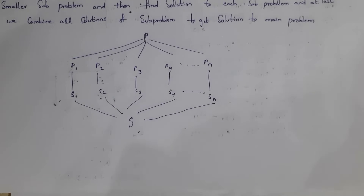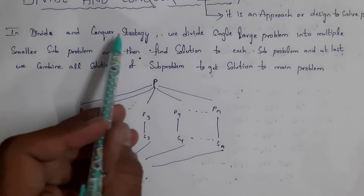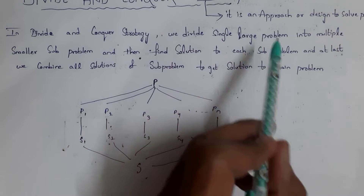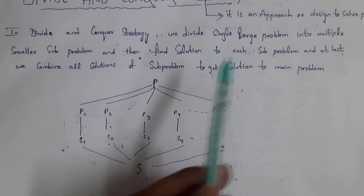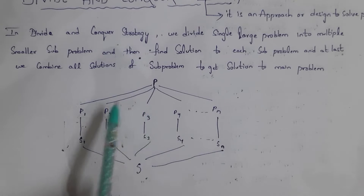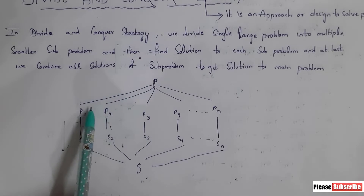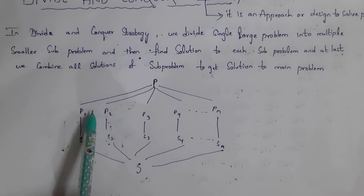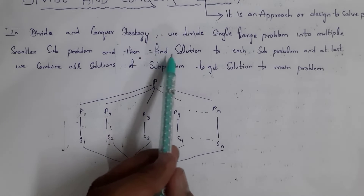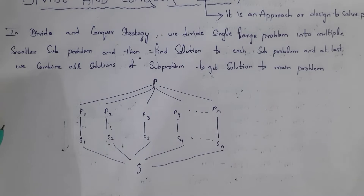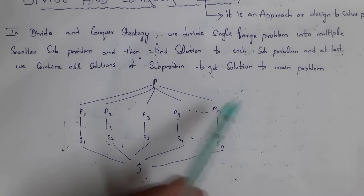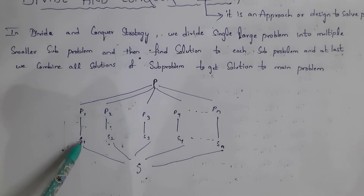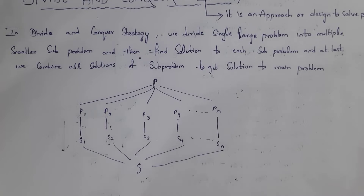This is known as divide and conquer strategy. In divide and conquer strategy, we divide a single large problem into multiple small sub-problems, find a solution to each sub-problem, and at last combine all these solutions to get the solution to the main problem.